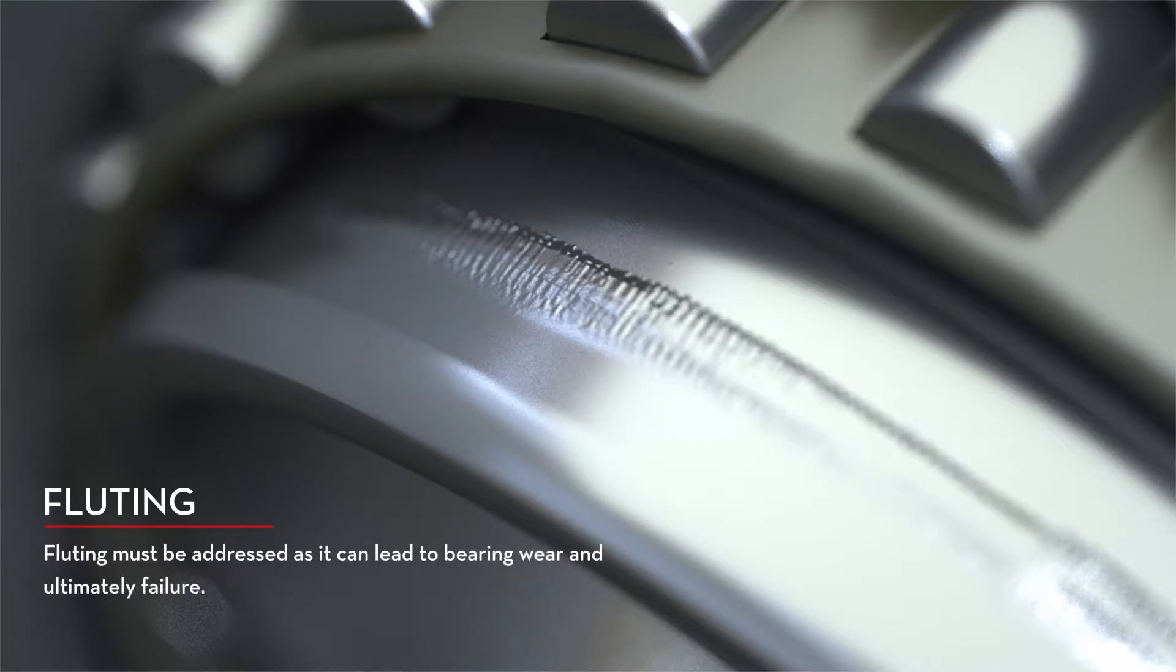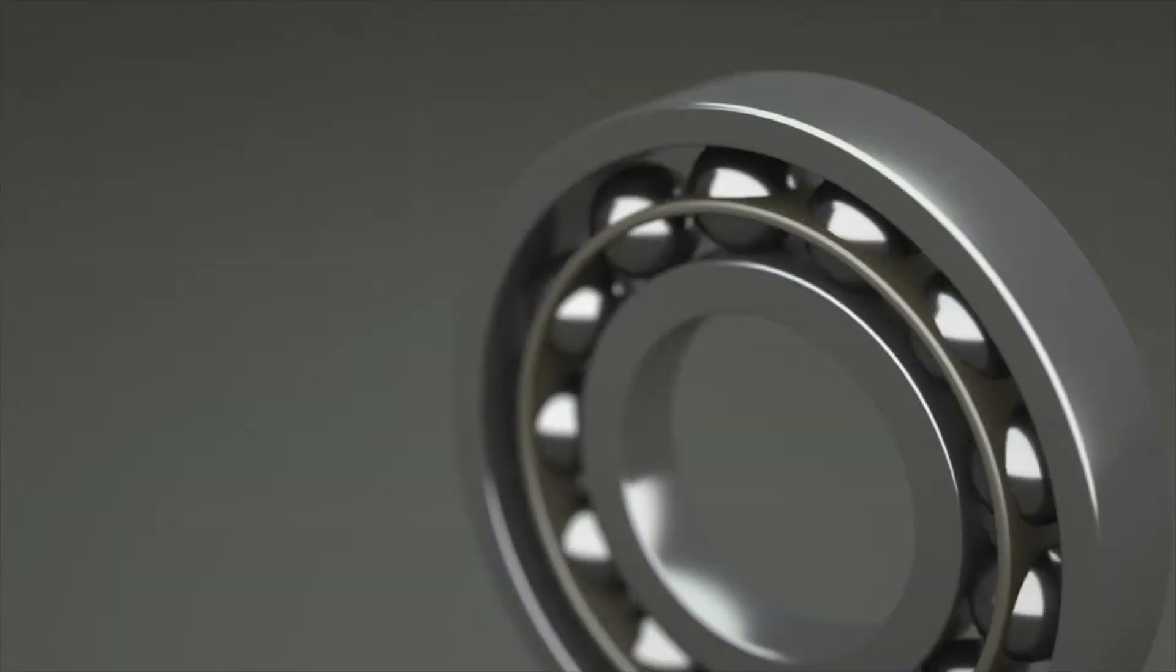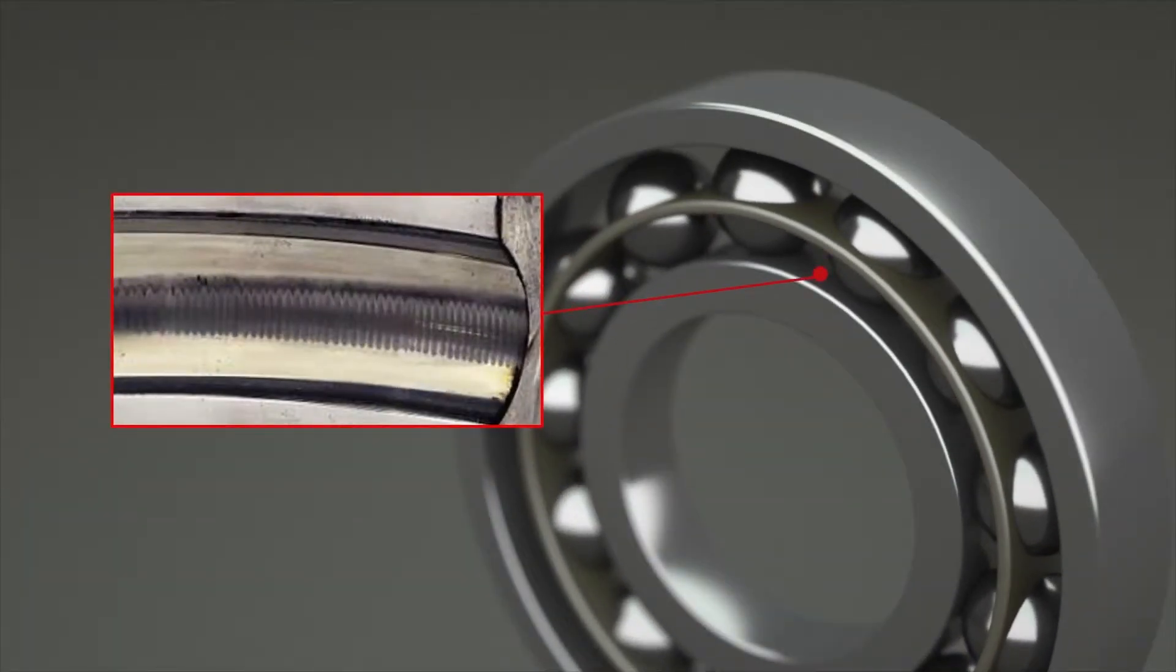Fluting must be addressed as it can lead to bearing wear and ultimately failure. If a bearing is experiencing fluting, the inner ring will likely have washboard-like ridges where the electrical current is wearing it down.